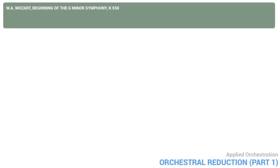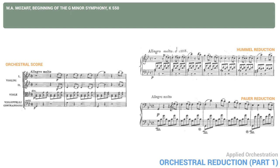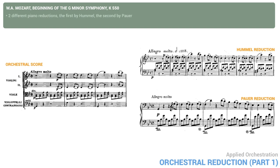Let's look at an example from Mozart: the beginning of the G minor Symphony, K550. Here are the first few bars of the orchestral score, then two different piano reductions. The first is by Hummel, and the second is by Power. As you might expect, both reductions preserve the melody as is. They also both preserve the bass line, but the reduction by Power preserves the octave shifts of the original.